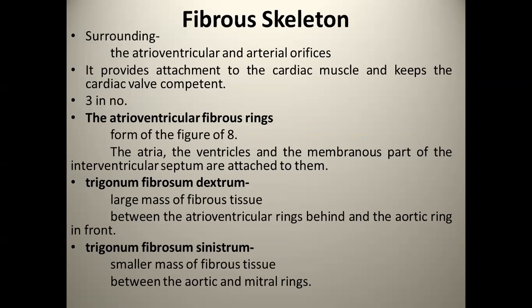इसके नंबर होते हैं, total तीन. पहला देखते हैं — the Atrioventricular fibrous rings. ये figure-of-eight के shape में form होते हैं. The Atria, the Ventricles, and the membranous part of the Interventricular Septum are attached to them.